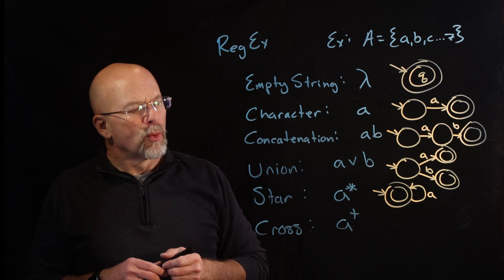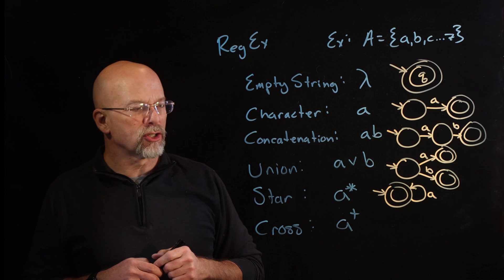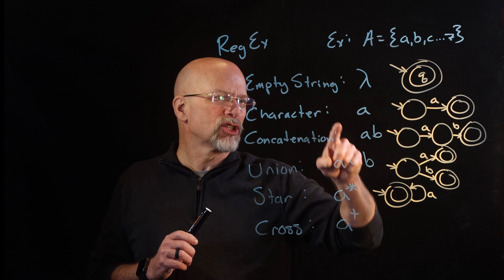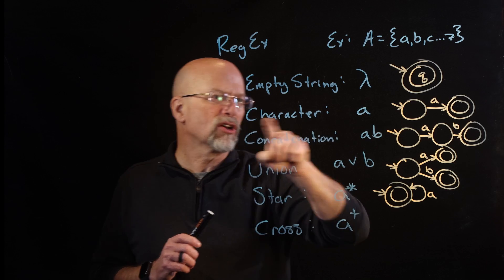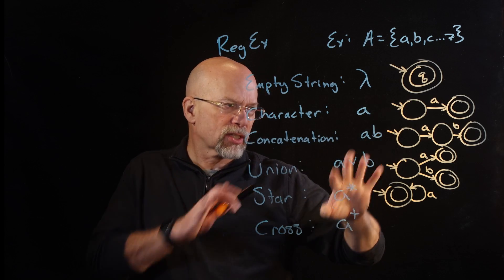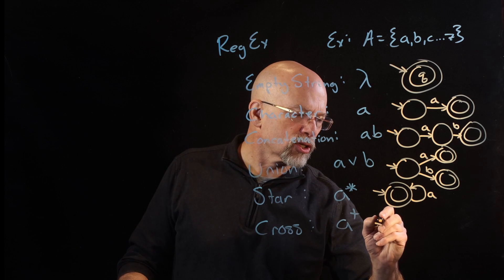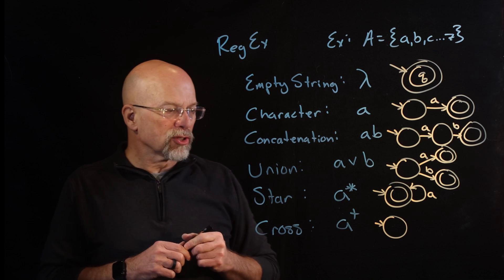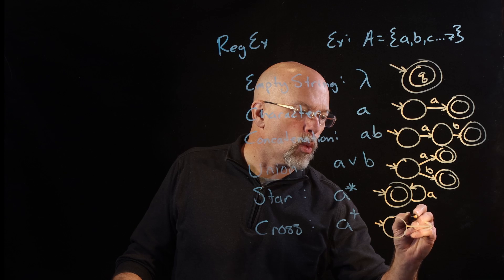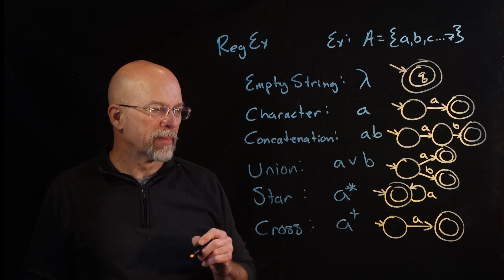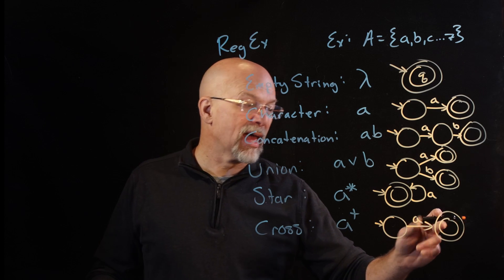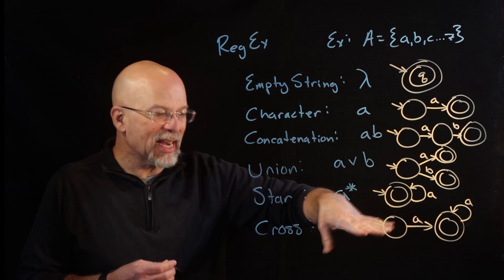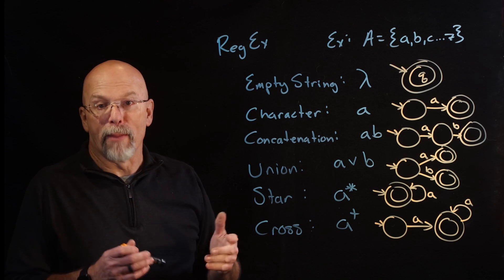For the cross (plus), we must receive at least one 'a' first. It's like a combination of the single-character FSM and star. Start with an initial state that is not a final state — we must receive at least one 'a' to reach the final state. Once we've reached the final state, we can receive as many additional a's as we want via a loop. That is the FSM representing the plus/cross.